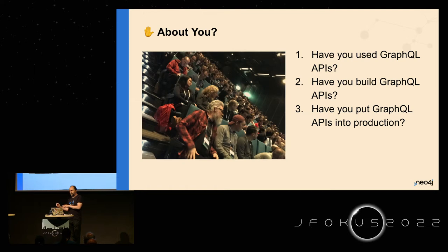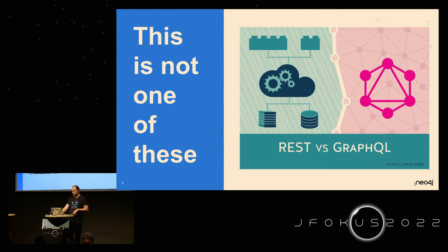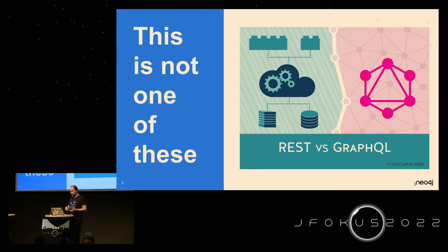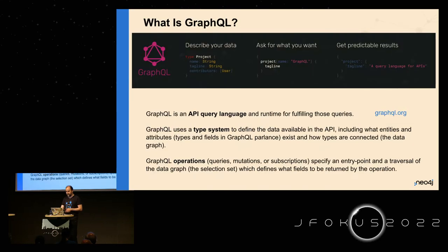I'll do a tiny bit of what is GraphQL, but the majority will be focused on how can we make it easier to build GraphQL APIs, secure them, and also put them out as well. We don't have too much time, so it would be good if you keep questions to the end. This is definitely not a REST versus GraphQL talk — I can assure you that this is not one of them.